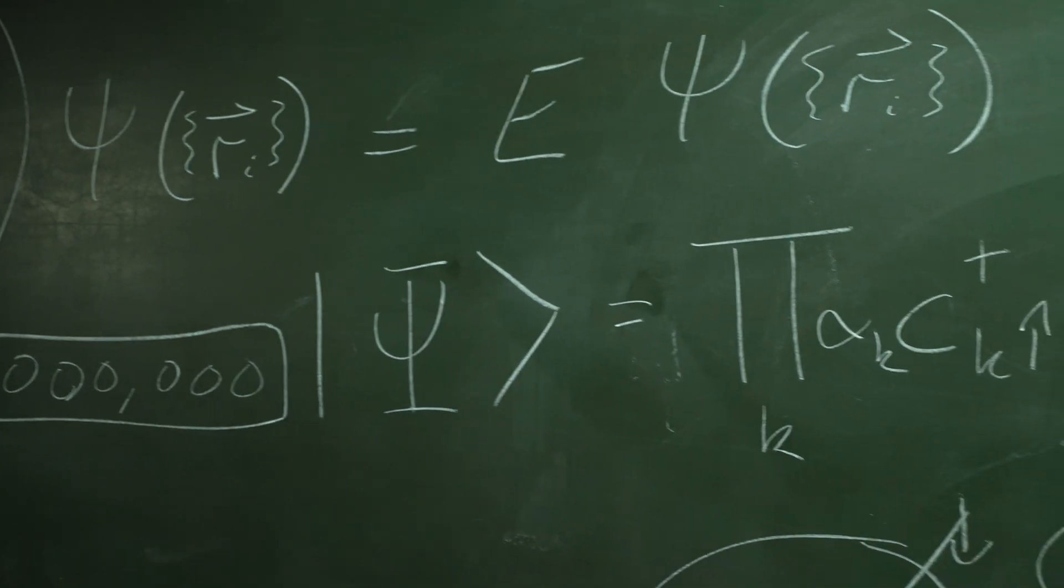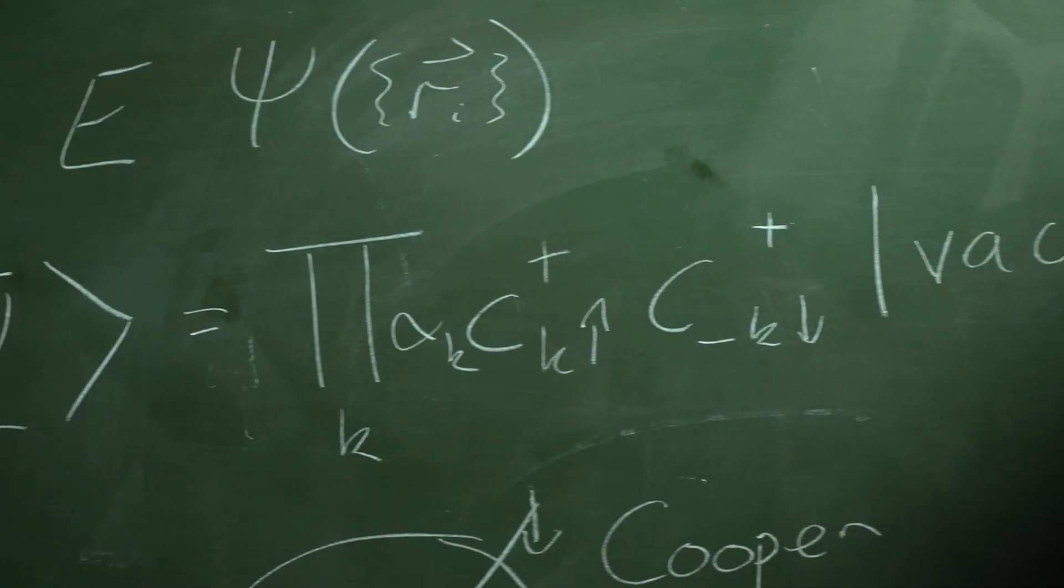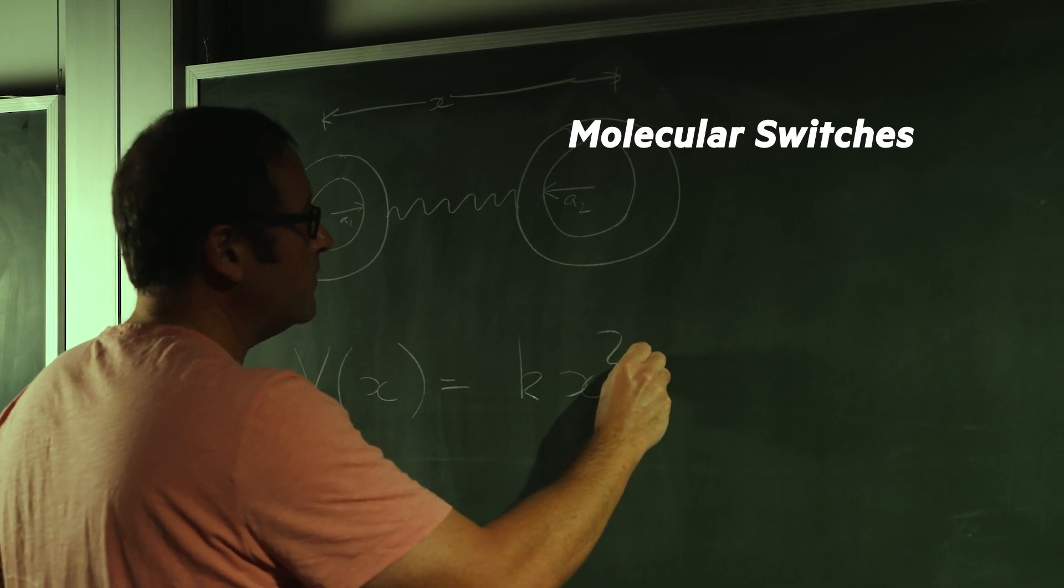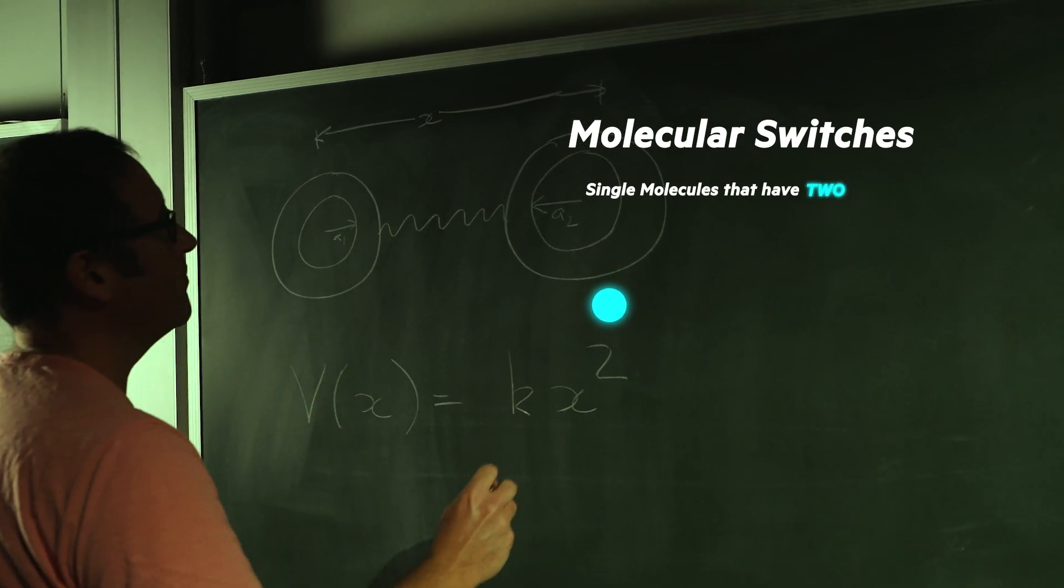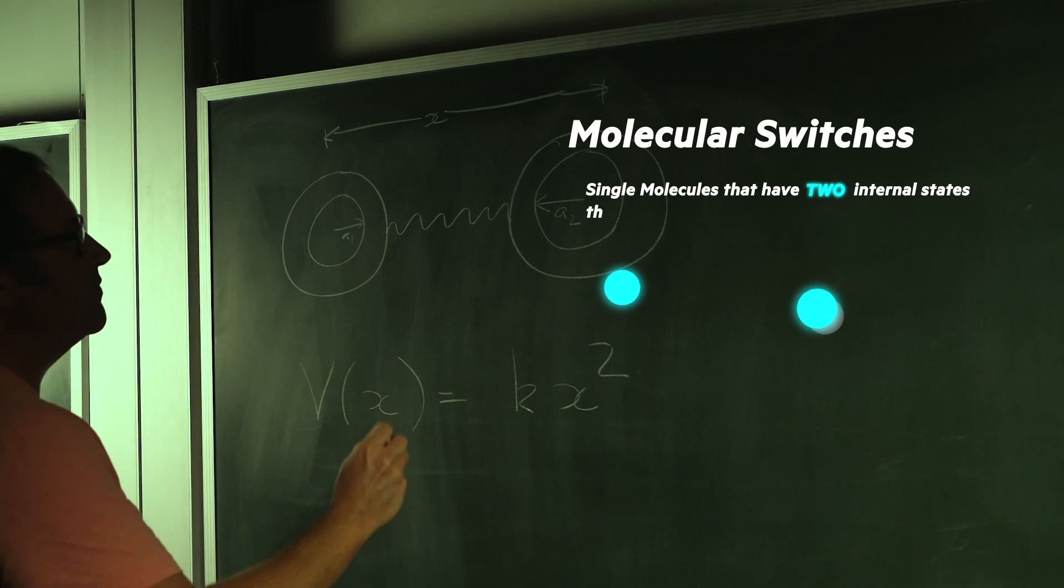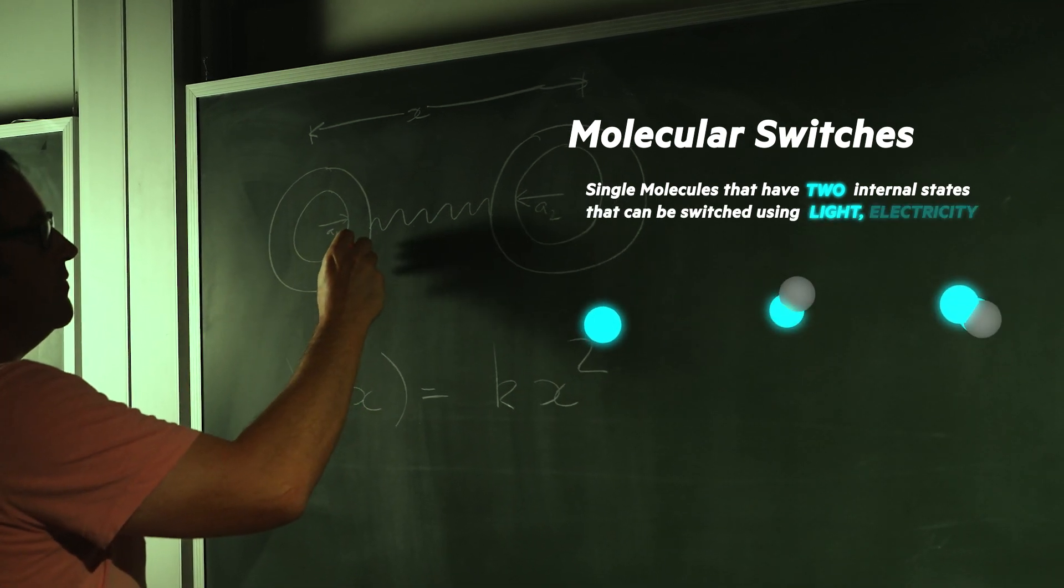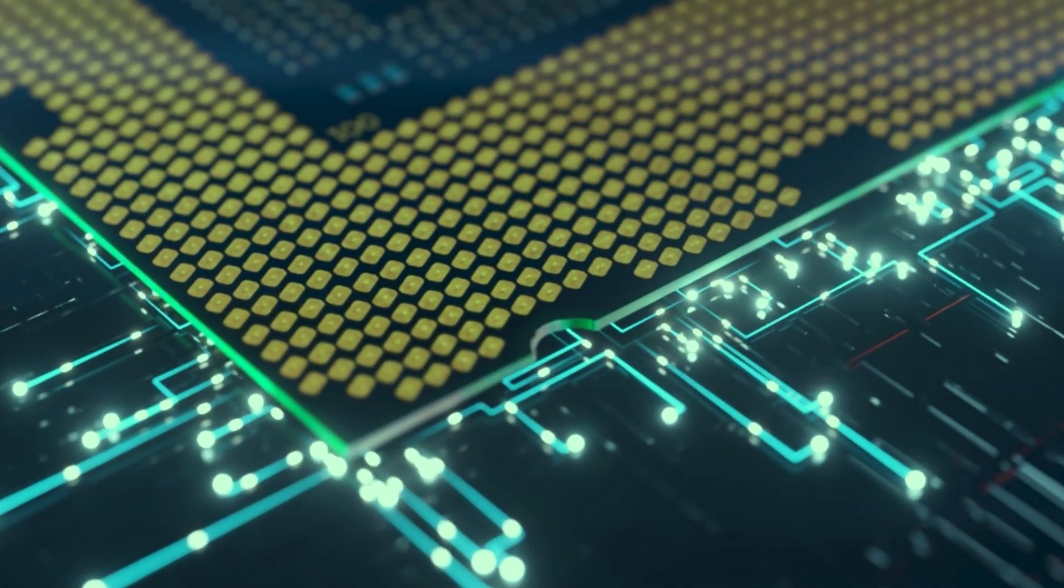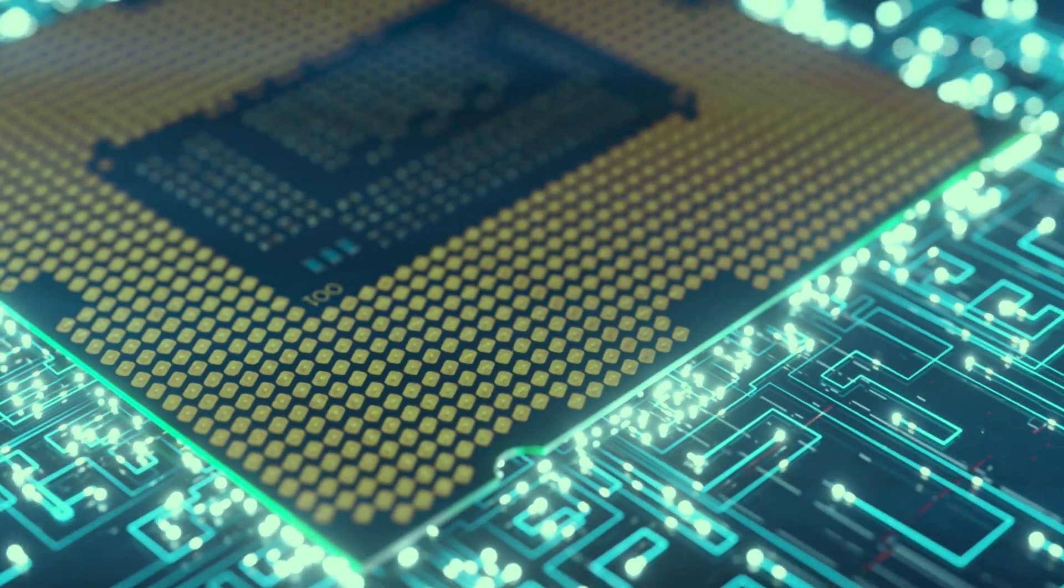These are some of the basic equations that describe superconductivity, and this is a simple model of molecular switches. Molecular switches are single molecules that have two internal states. They can be switched using light, electricity or temperature, and they have the potential to be used in phones and computers to make them smaller and more energy efficient.